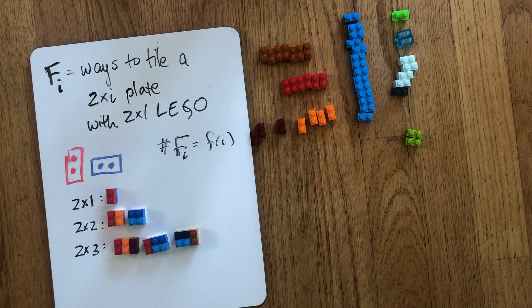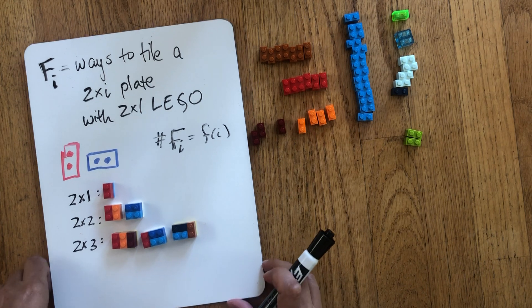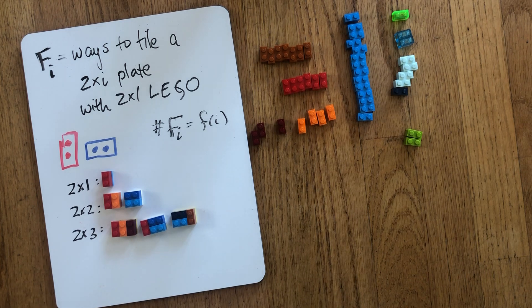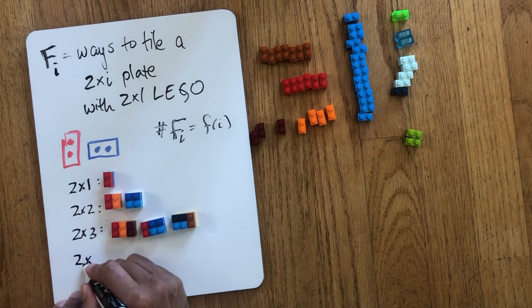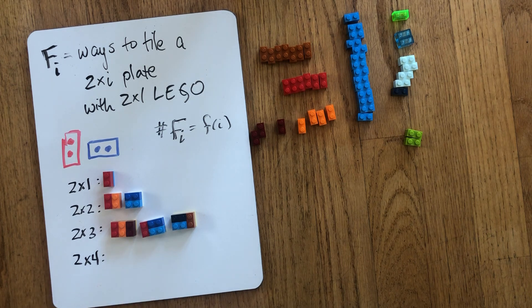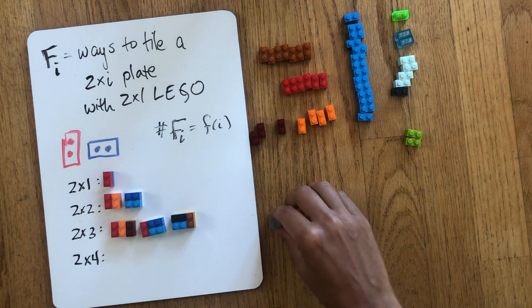So if someone asks you, okay, what's the sequence 1, 2, 3? What term comes next? You should not be lulled into telling them an answer. We need more data. So let's do 2 by 4 and see how this goes. Okay. I've got my 2 by 4 plate.